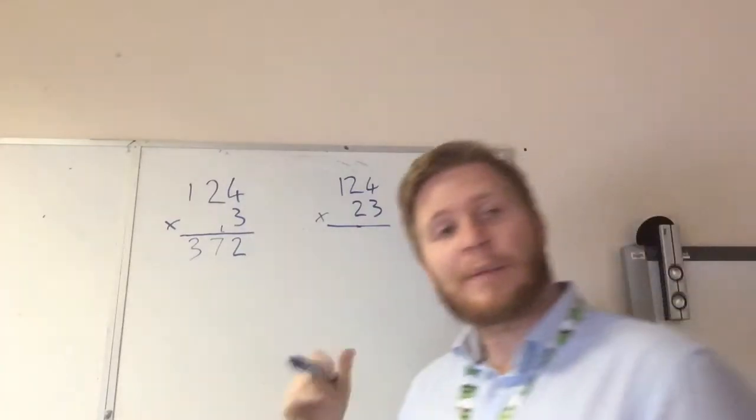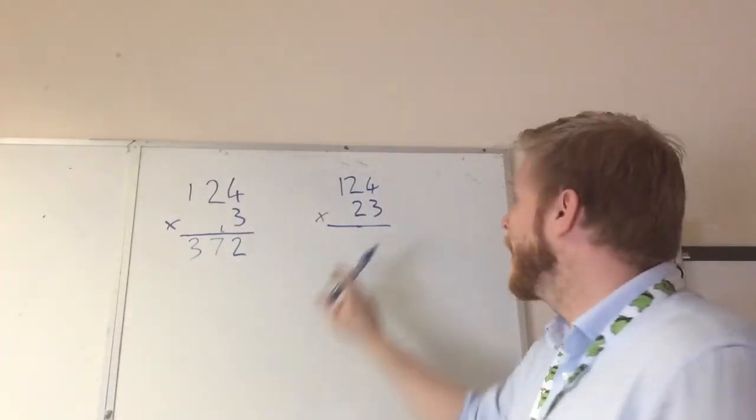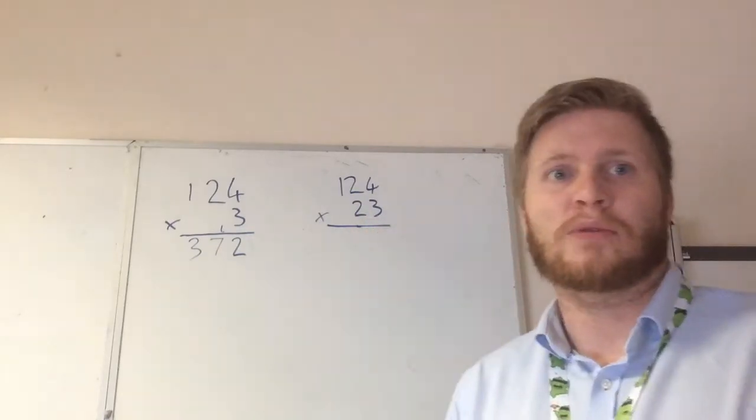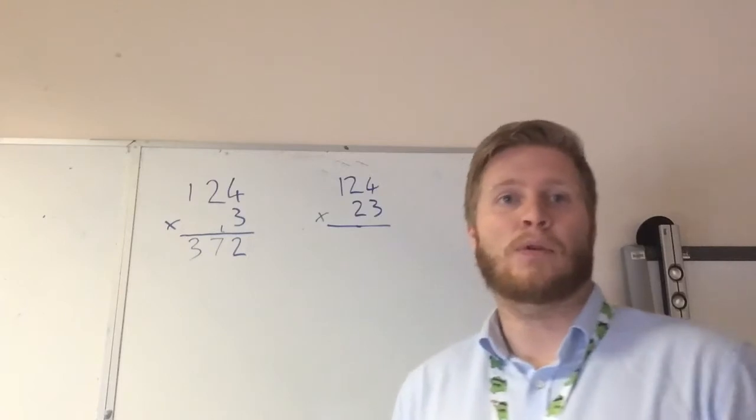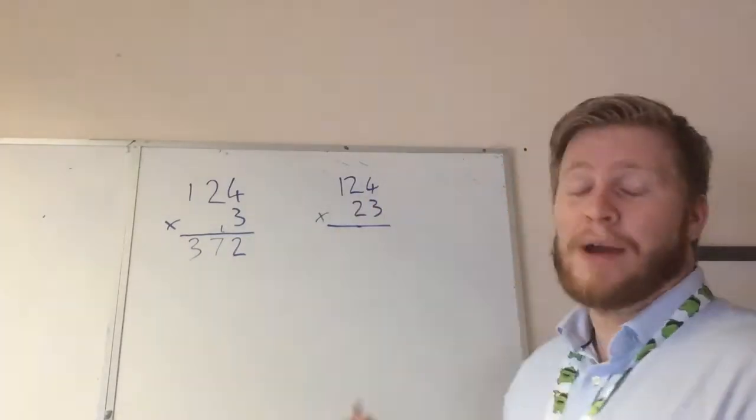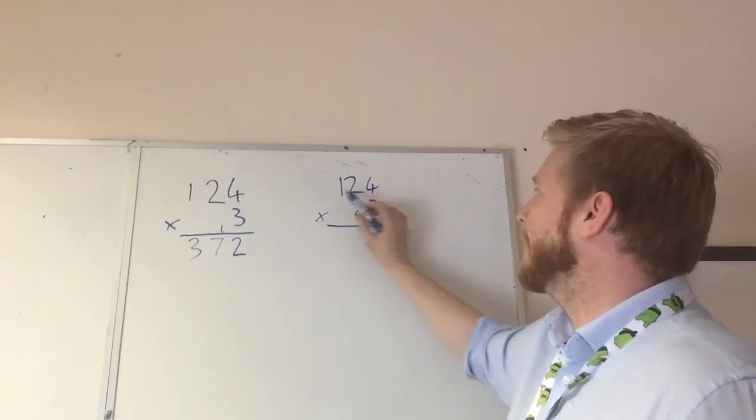Next we're going to move on to this one. Now this one's a little bit harder, because we've got, obviously, 124, the same number, but times by a 2-digit number, so it's 23 this time. Now we start off exactly the same. We can't do that in our heads, it's too big a sum.